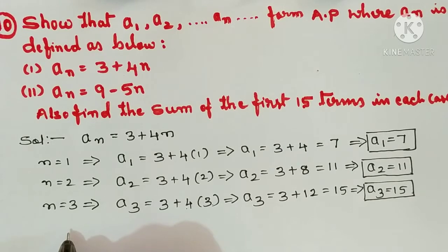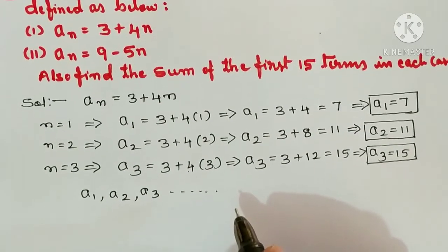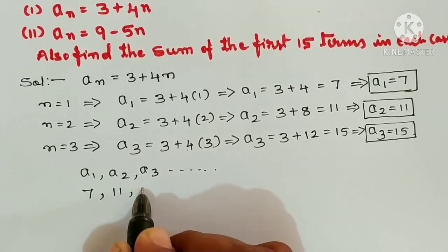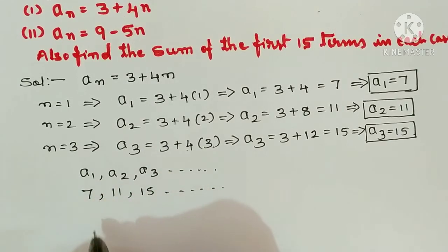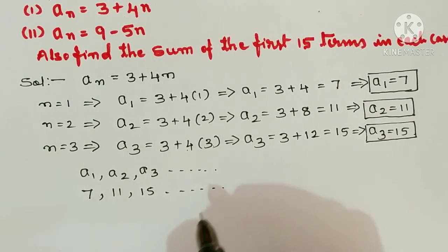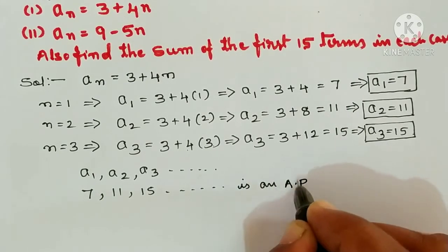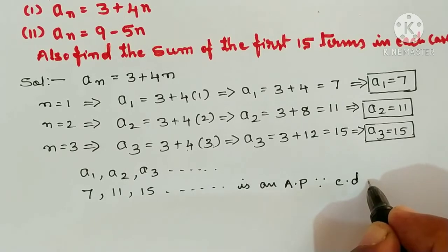So here a1, a2, a3, dash dash dash. What we got: first term a1 is 7, a2 is 11, a3 is 15. Now, for it to be an AP, the difference should be the same. We see 11 minus 7 is 4, and 15 minus 11 is also 4. So the difference is 4, difference is same. So 7, 11, 15 is an arithmetic progression, because common difference d is 4.